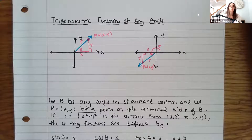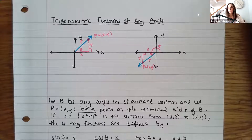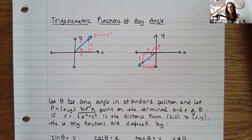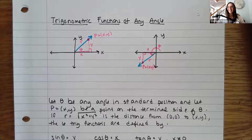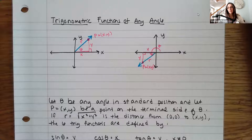In this next section, we're going to look at trigonometric functions at any angle. If you go back to our last few videos, you'll notice that we focused on right triangle trigonometry, where our triangles formed right angles and the other angles, because of that, were less than 90 degrees. So we had all these acute triangles that we were focusing on.